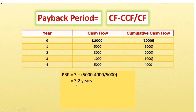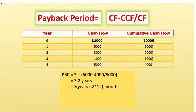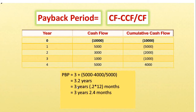Now 3.2 years can be confusing — we understand the three years but what does the 0.2 represent exactly in months? To convert the decimal 0.2 into months, we multiply by 12 because there are 12 months in one year: 0.2 multiplied by 12 gives us 2.4 months. So we have three years and 2.4 months. We understand the two months, but what does the 0.4 represent in days?